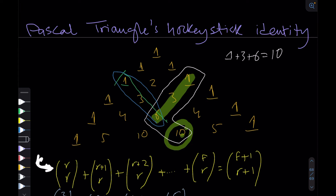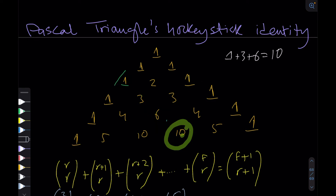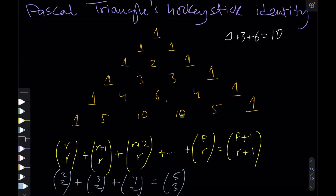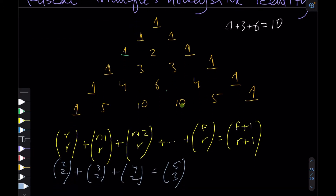The interesting result is that if I add all of these, it equals the element in the blade. This can be formally written as: r choose r, plus r+1 choose r, plus r+2 choose r, all the way to f choose r, equals f+1 choose r+1. For example, starting from 2 choose 2 up to 4 choose 2 should equal 5 choose 3, and we can verify this is true.